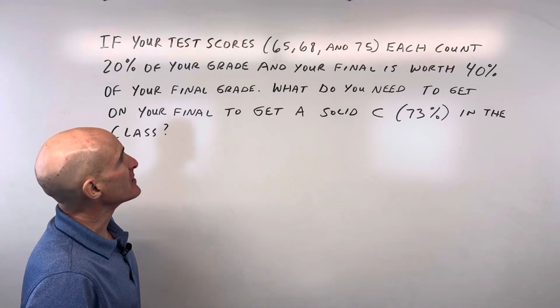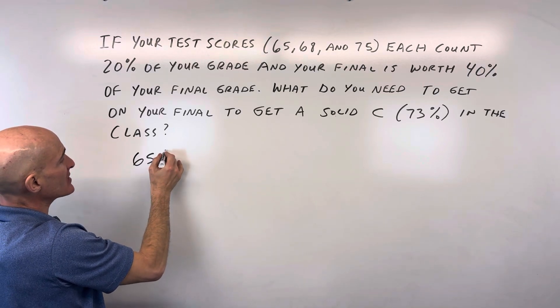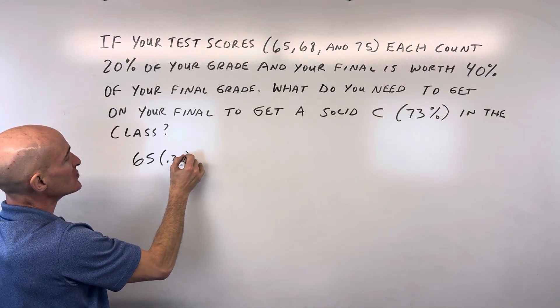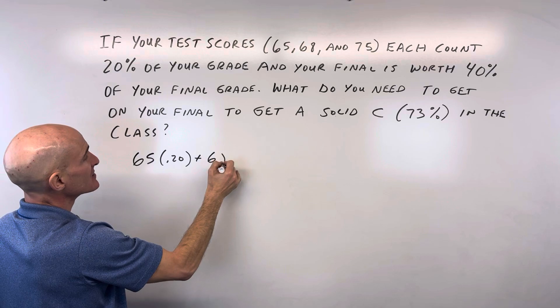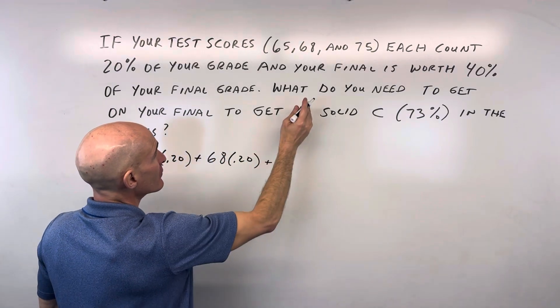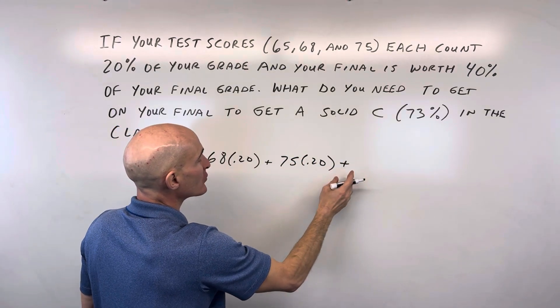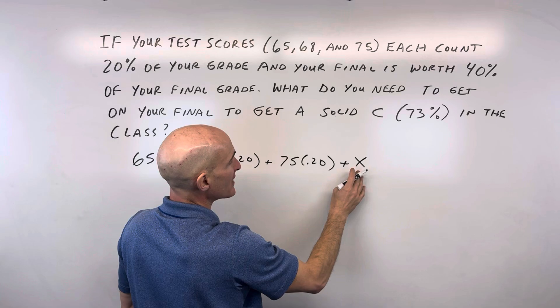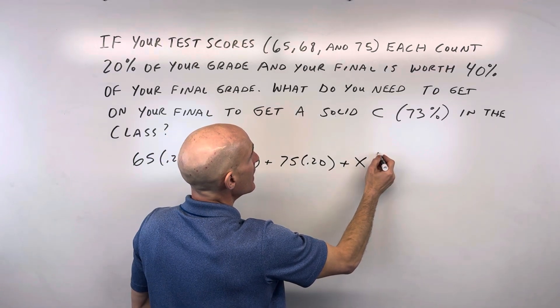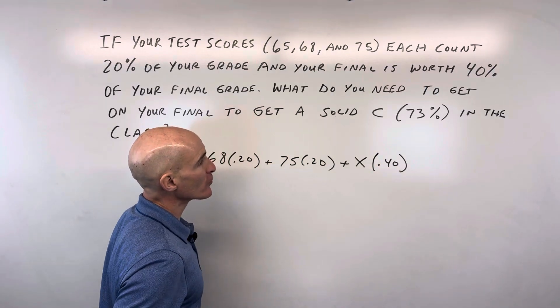So the way I would set this up is I would take the 65 and that's worth 20%, so 0.20, plus the second test at 20%, plus the third test at 20%. And then we're trying to figure out what to get on the final. We don't know what that's going to be. We're going to call that X and that's worth 40%, so 0.40.